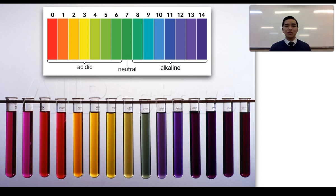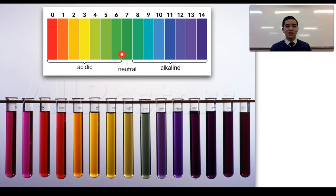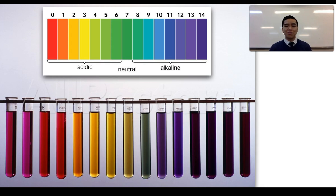Universal indicator's colors can be used to determine the pH of a solution. At the lower end of the pH scale we have reds, oranges, and yellows; going to the neutral we start to get green colors; and as you further increase pH you get blues and then purples. There is quite a range of colors that can be produced at particular pH values.